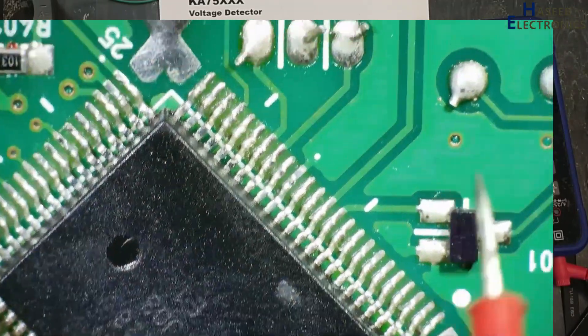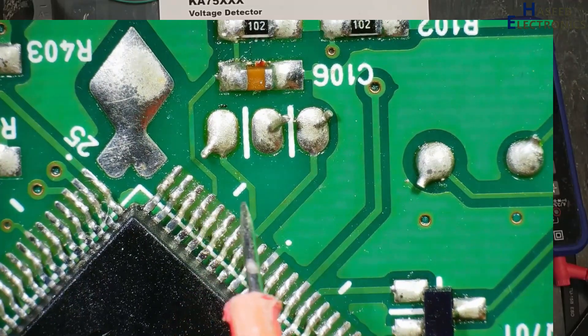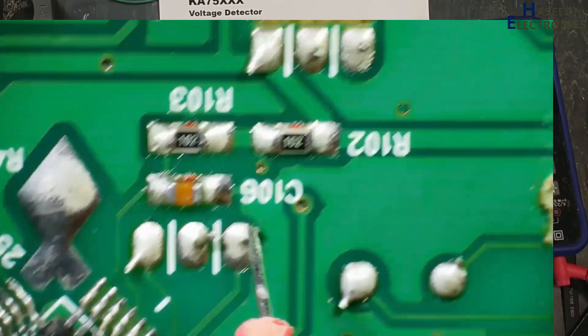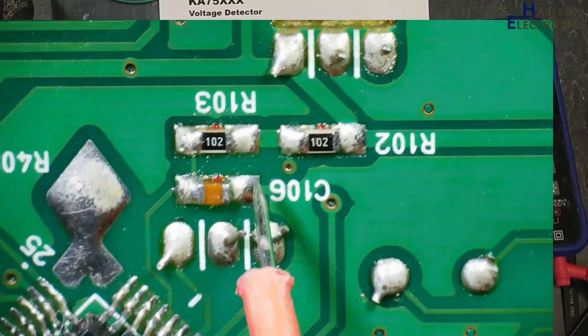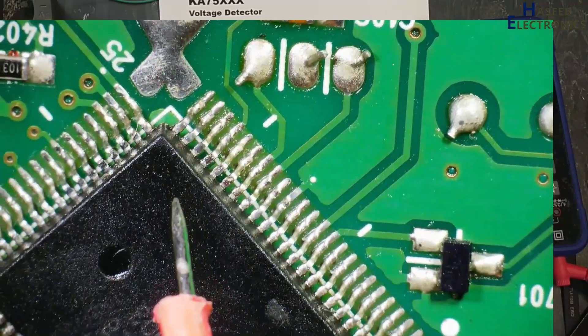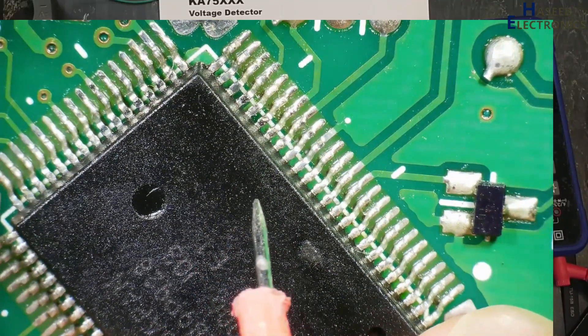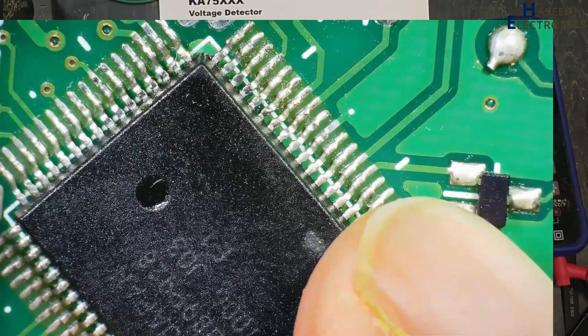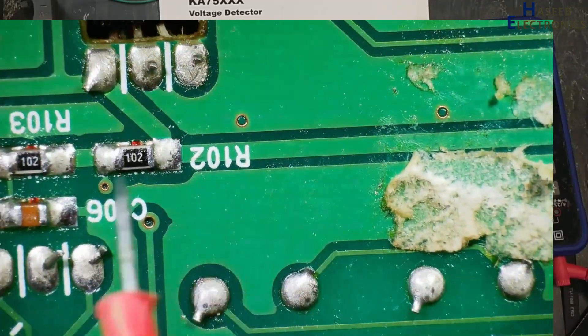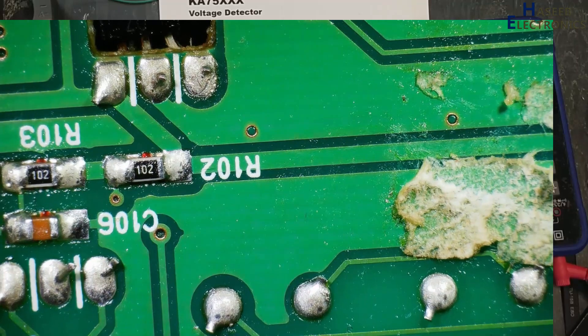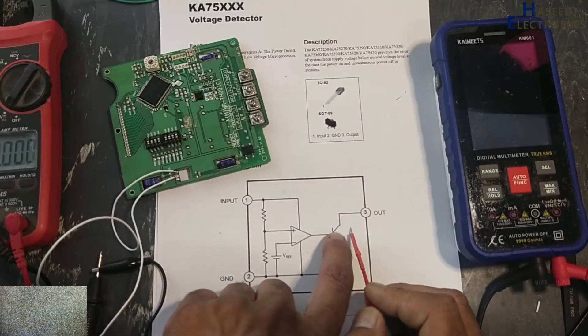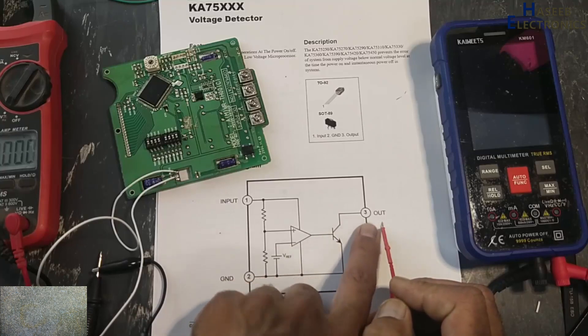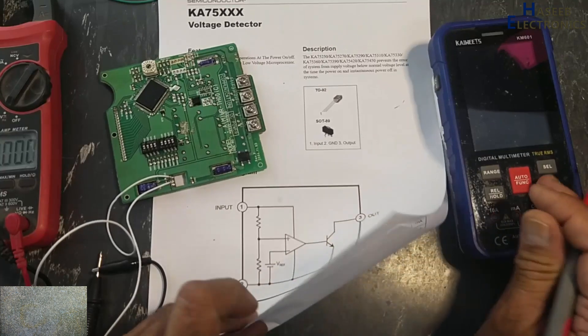It is bound until the voltage are reached at specific limit, that are 3.3 volt, that is the minimum level. Above 3.3 volt, this processor will start work. So we can say it is a safety component. When the voltage are maintained at this pin, at that time it will provide output, otherwise its output is active low.